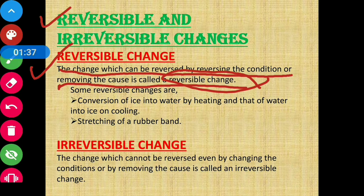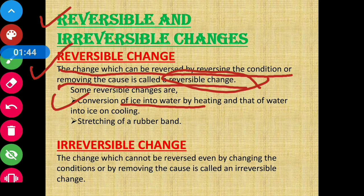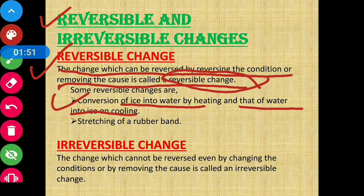Some examples of reversible changes are: conversion of ice into water by heating, and water into ice by cooling. If we want to convert ice to water, we warm up the ice. Similarly, we can also convert the water back to ice — the condition in that case will be cooling.